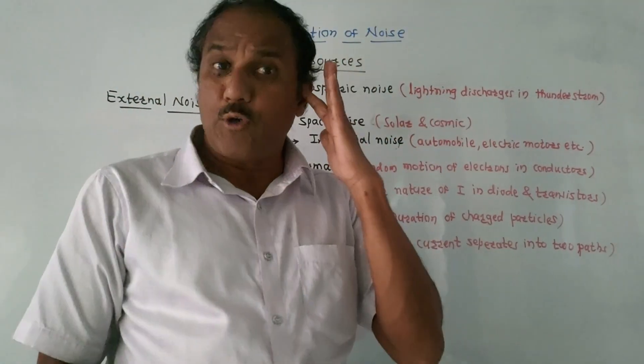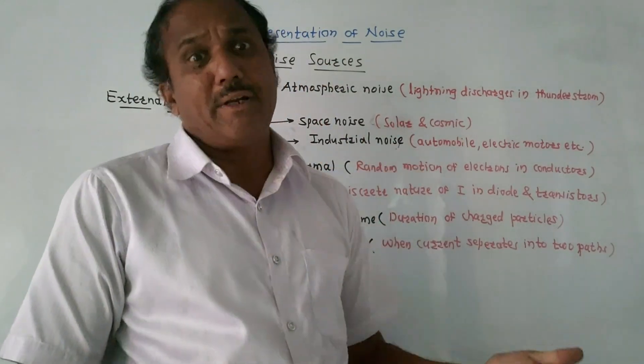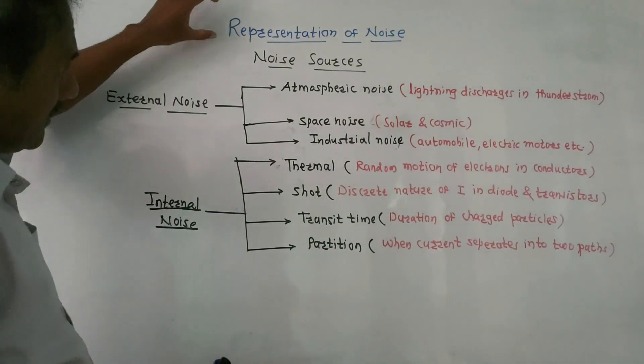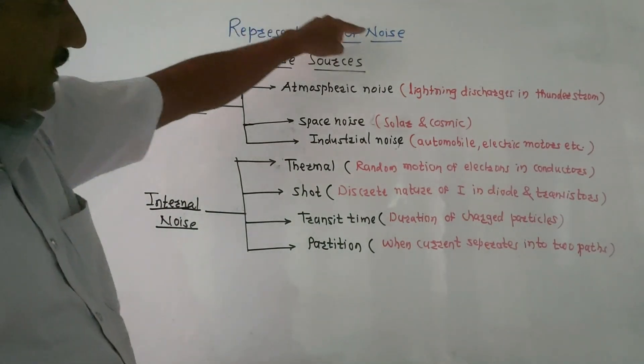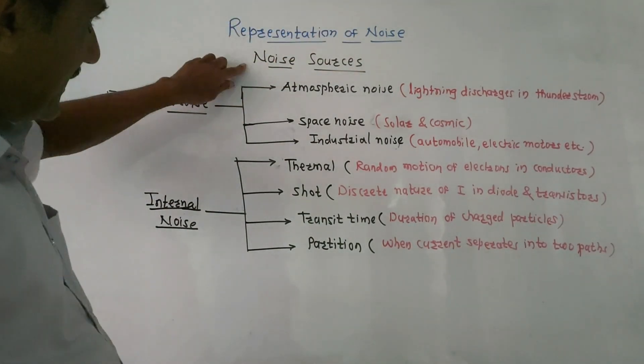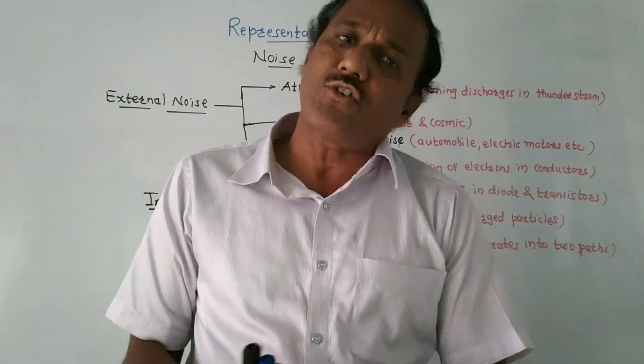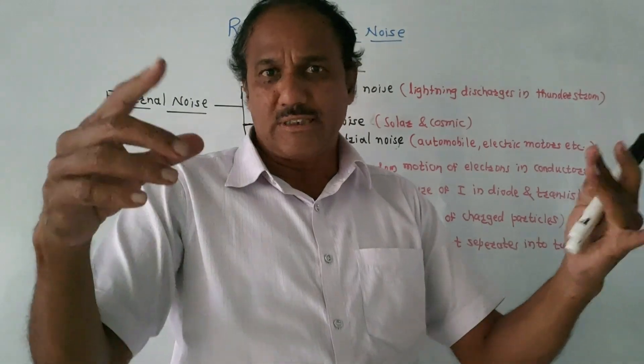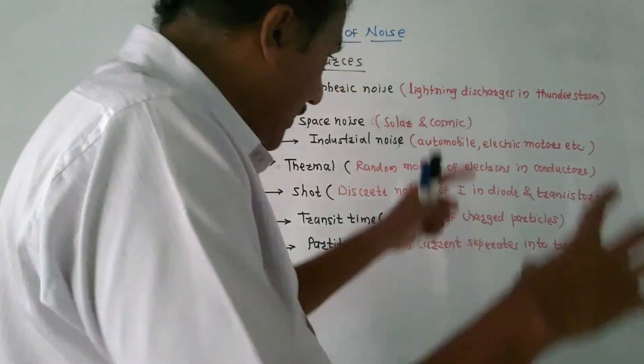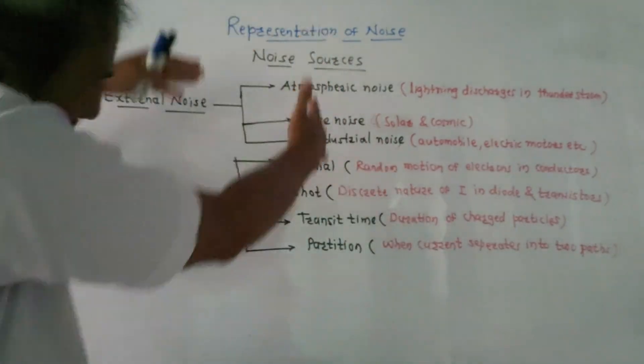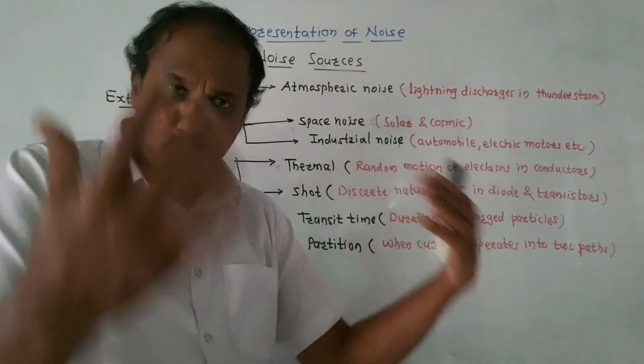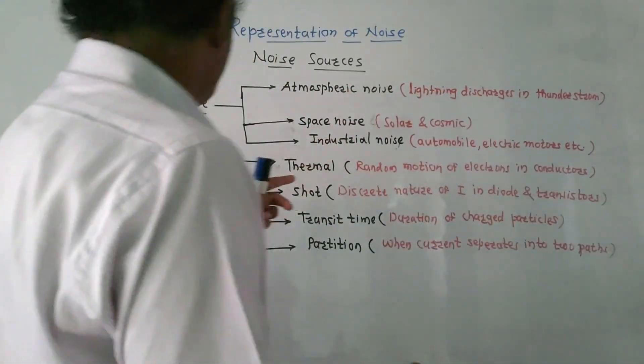Previously, many videos have been made on every topic and subtopic of unit one. Please do watch those videos. So we will talk about the representation of noise. The first part is noise sources. From an exam point of view, you can expect questions like what are the different types of noise sources or explain the types of noise sources. This is a summary of all the types. If you just remember these names, you will be in a position to write the answer to this question.